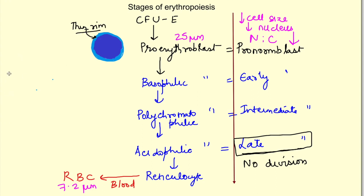The next stage is basophilic erythrocyte or early normoblast. As the name suggests it is basophilic because the cytoplasm stains blue and the size of the nucleus will decrease a little bit.